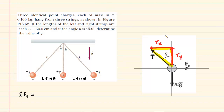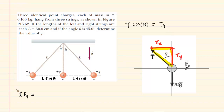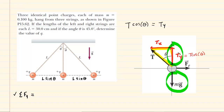Looking at the right triangle in yellow, the cosine of angle theta equals the adjacent side over the hypotenuse. The side adjacent to theta is TY, and the hypotenuse is T. Multiplying both sides by T gives us TY equals T cosine theta. For the sum of forces in the Y direction, we have TY pointing upward — so positive T cosine theta — and the gravitational force pointing downward, so minus mg. Those are the only two forces acting exclusively in the Y direction. Since the rightmost charge is in equilibrium and not accelerating, the sum of forces equals zero.